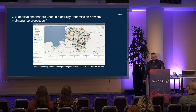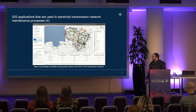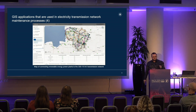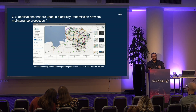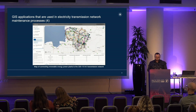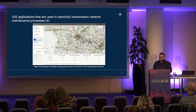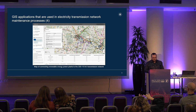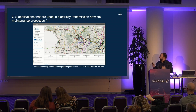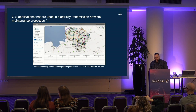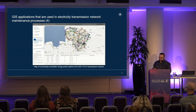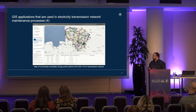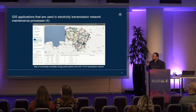The fourth application is the map of connected renewable energy power plants to the transmission grid. This application shows preliminary information on the generation capacities that can be connected to the network. It also provides information about preconditions of connections, intentions protocols, and power plants connected to the transmission grid. You can filter information by voltage, year, and other parameters. This map is important for renewable energy developers and is accessible to the public on our company website.